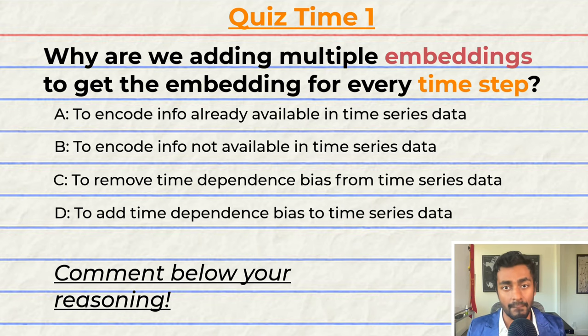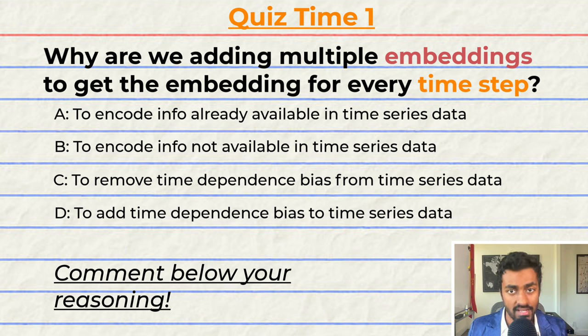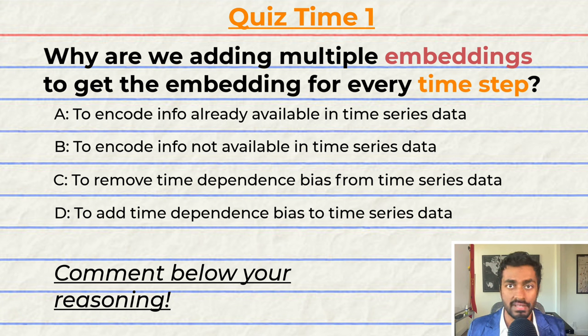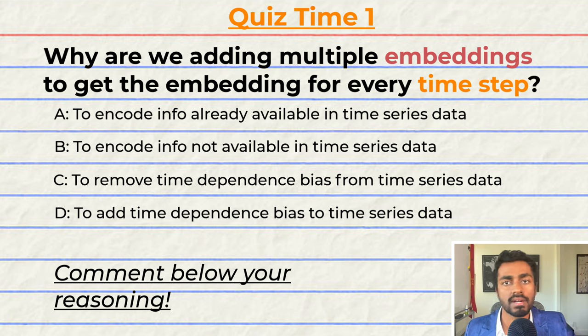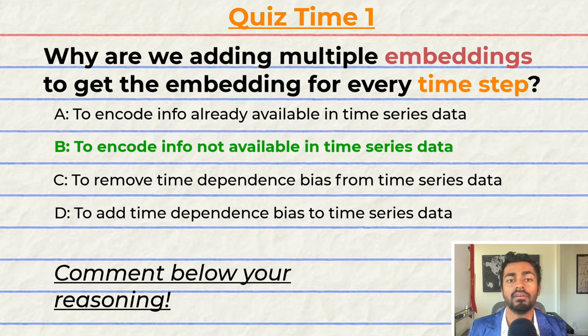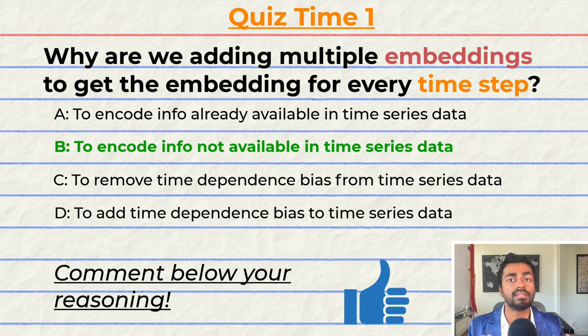Quiz time. Have you been paying attention? Let's quiz you to find out. Why are we adding multiple embeddings to get the embedding for every timestamp? Note that multiple answers may be correct. The correct answer is B — comment your reasoning down below and let's have a discussion. If you think I deserve it, please consider giving this video a like. That's it for quiz one and pass one of this explanation — keep paying attention because I will be back to quiz you.